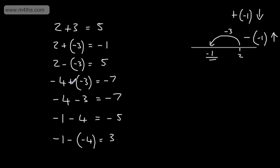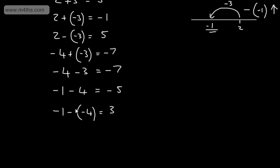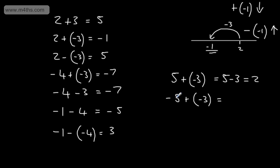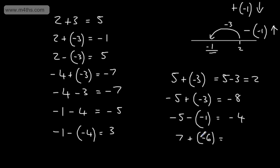This is where we start on the number line — this is the operation, and this is the number. So: 5 plus negative 3 is identical to saying 5 minus 3, which gives us 2. Negative 5 plus negative 3 — we start at negative 5 and subtract 3 — gives us negative 8. Negative 5 subtract negative 1: we increase the value, moving closer to 0, giving negative 4. 7 plus negative 6 means subtracting, giving 1. 7 minus negative 3 means adding, giving 10.